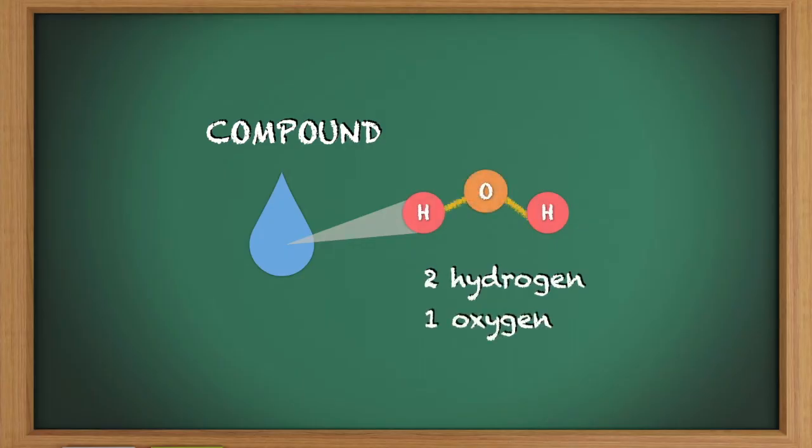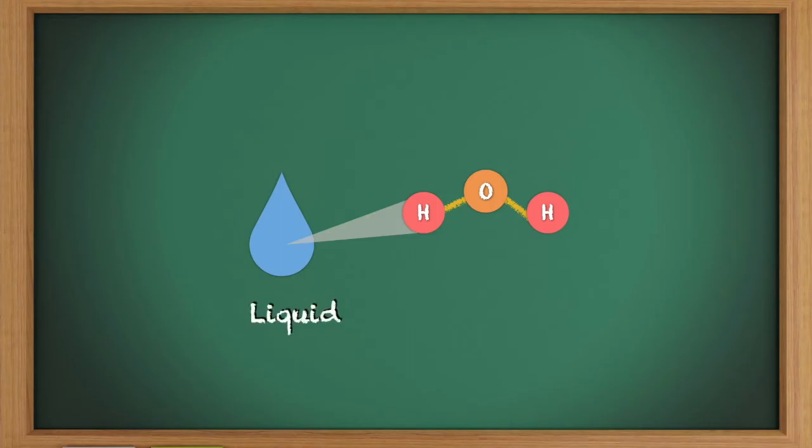How on earth is water, a liquid, composed of two elements that are gases?